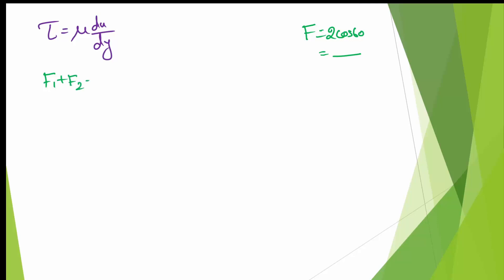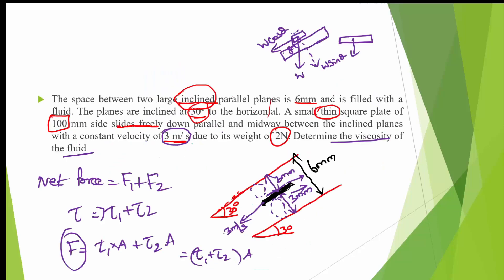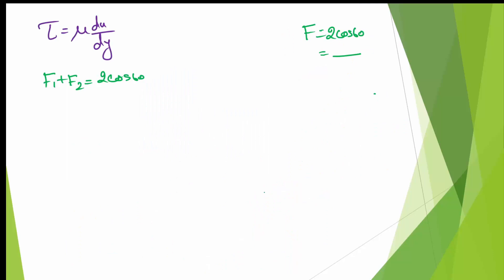So F1 + F2 = 2cos60°. Using τ = μ × (du/dy), du = 3 m/s and dy = 3mm = 3×10⁻³ m. The same values apply on both sides, so τ1 = τ2. If the plate were not centered, we would calculate τ1 and τ2 separately, but since it is equidistant, τ1 = τ2 = μ × 3 / (3×10⁻³).